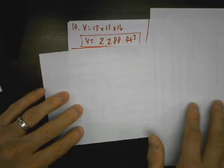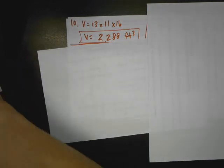For number 10, we have a large concrete block, cornerstone of a building, which is a rectangular prism shape. And the block is 13 by 11 by 16. We just simply multiply those three together. You should get 2,288 feet cubed.